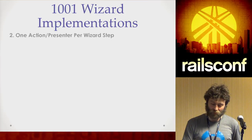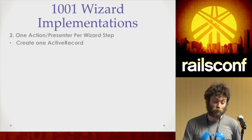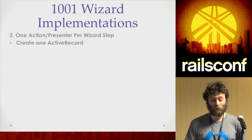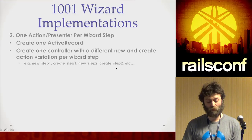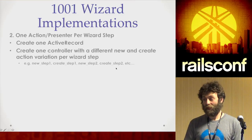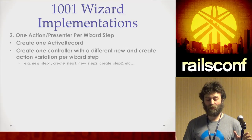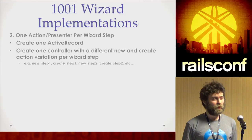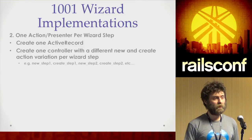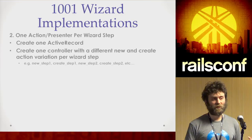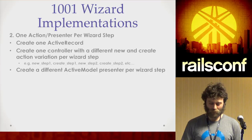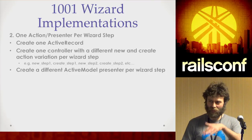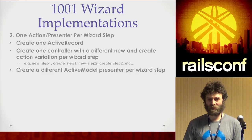Another approach is one action and presenter per wizard step. Keep one ActiveRecord, but I've seen this approach in a code base where there were different actions: new step one, create step one, new step two, create step two — so there were like eight actions on that controller, each mimicking the new and create on a RESTful resource. Although it feels RESTful, it was not REST anymore — it already broke out of the REST paradigm. It still had some repetitive code across the actions, so it was just a slight improvement to the problem.